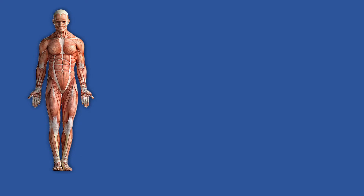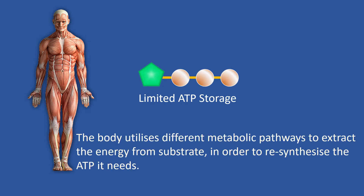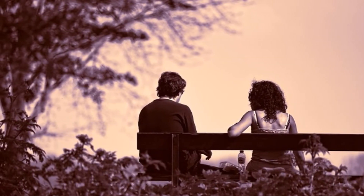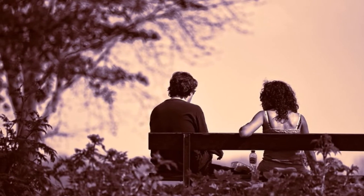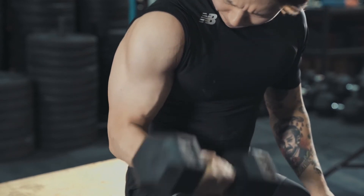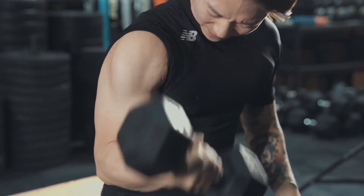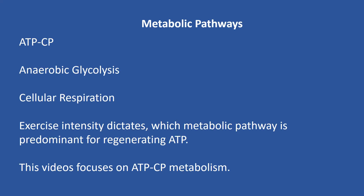The storage of ATP within the body is very limited, and therefore it needs to be regenerated constantly. The body utilizes different metabolic pathways to extract the energy from substrate in order to resynthesize the ATP it needs. At rest, the great majority of ATP resynthesis occurs via cellular respiration. While during exercise, the energy demand by the working muscles increases dramatically, and ATP is resynthesized by the concerted action of three metabolic pathways: the ATP-creatine phosphate metabolism, anaerobic glycolysis, and cellular respiration.